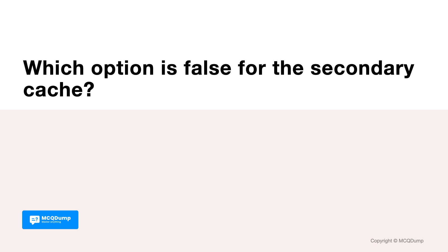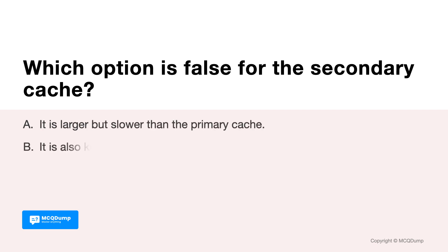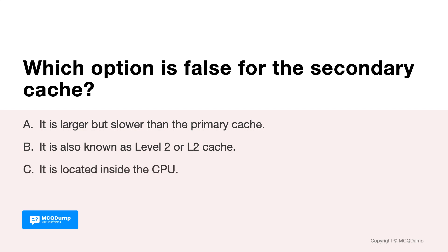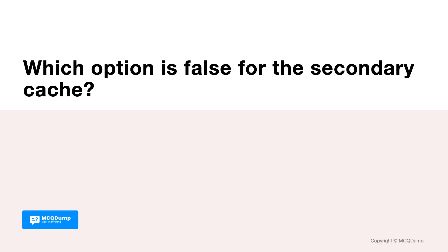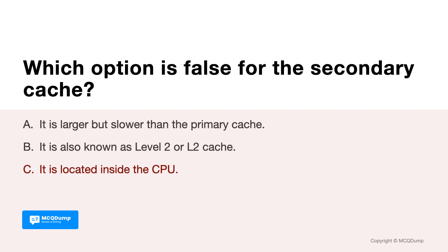Which option is false for the secondary cache? Options are: A. It is larger but slower than the primary cache. B. It is also known as Level 2 or L2 cache. And C. It is located inside the CPU. Answer is C. It is located inside the CPU. Actually, it remains on the motherboard.